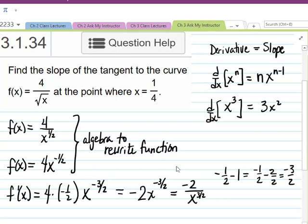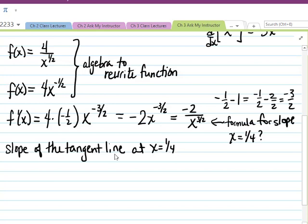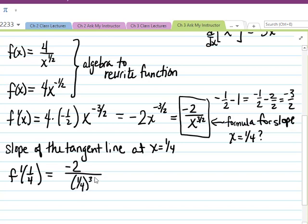So what we've accomplished so far is we got a formula for the derivative at any point x. In other words, we got a formula for the slope. What we were asked to find is, what is the slope when x is equal to one-fourth? So we need to find f prime of one-fourth. The slope of the tangent line at x equals one-fourth is f prime of one-fourth. f prime is given by negative 2 over x to the three-halves. So we're going to plug in and get negative 2 over one-fourth to the three-halves.